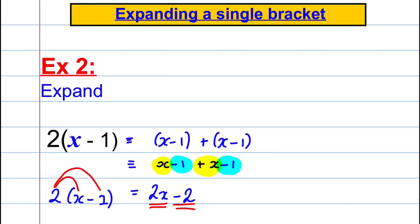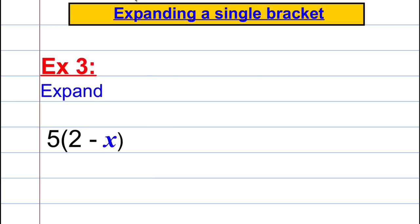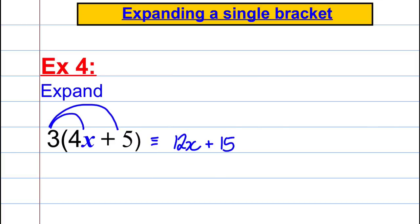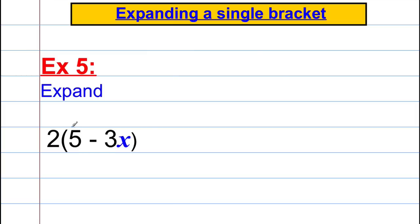Example 3: 5(2 − x). We do 5 multiplied by 2 = 10, and 5 multiplied by negative x = negative 5x, giving 10 − 5x. Example 4: 3(4x + 5). We do 3 multiplied by 4x = 12x, and 3 multiplied by positive 5 = positive 15, giving 12x + 15. Example 5: 2(5 − 3x). We do 2 × 5 = 10, and 2 × negative 3x — positive times negative is negative — giving 10 − 6x.